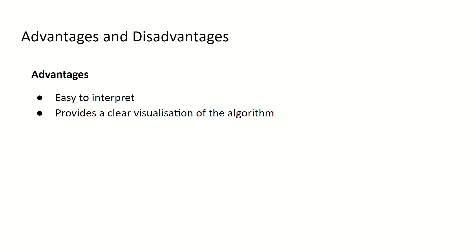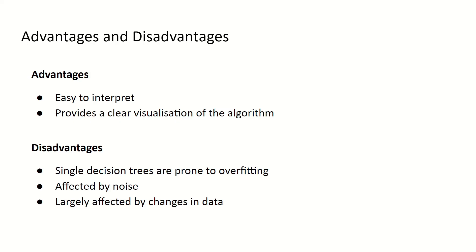Some advantages of decision tree classifiers include that they are easy to interpret and provide a clear visualization of the algorithm — often after applying a decision tree to your data, you can look at exactly what decisions were made to classify data. Some disadvantages include that single decision trees are prone to overfitting, especially on very complex data; they are affected by noise; and they are largely affected by changes in data — for example, changing a few data points could have a large effect on the decision tree being built. Thank you very much for watching, and I hope you learned something new.